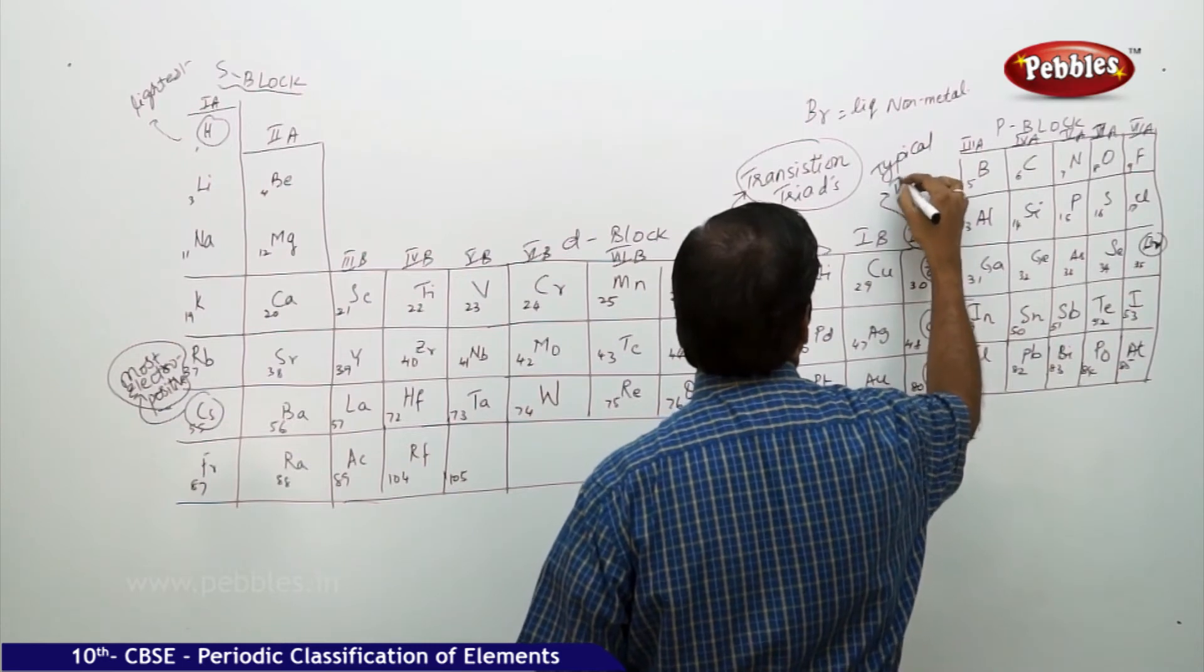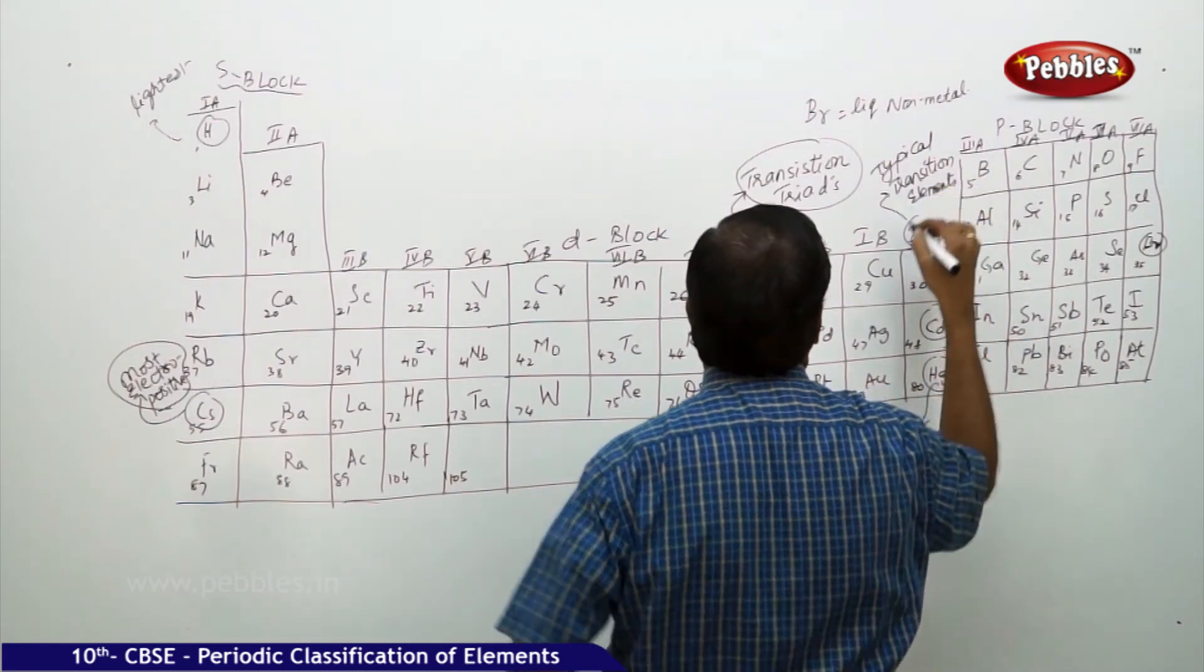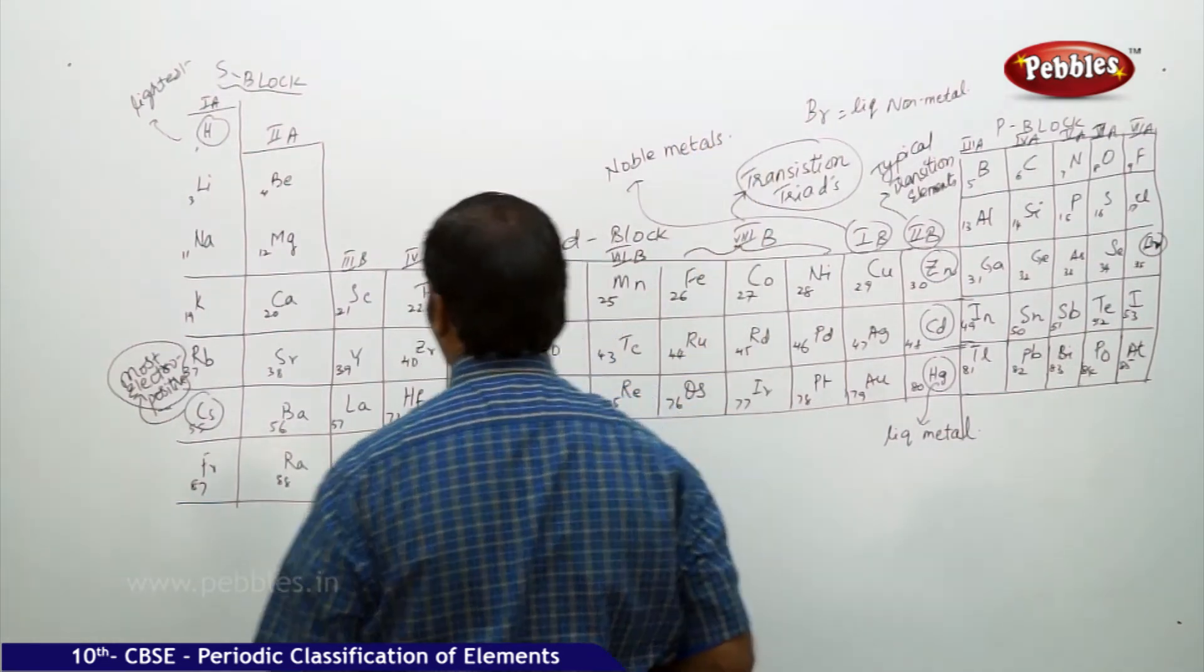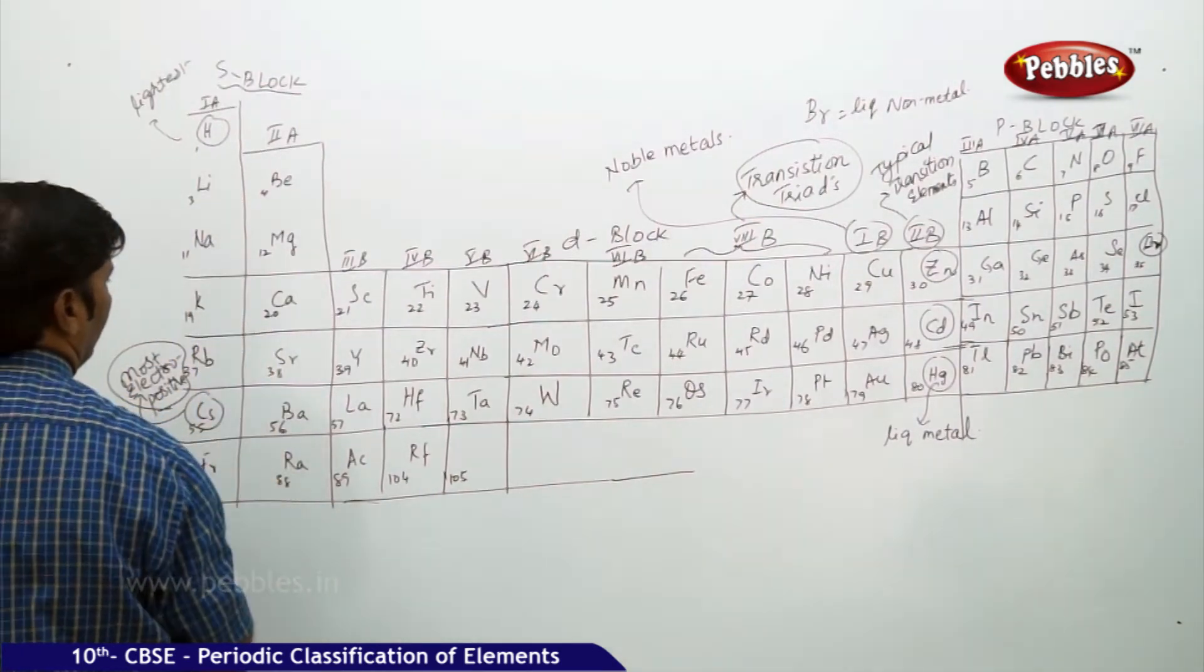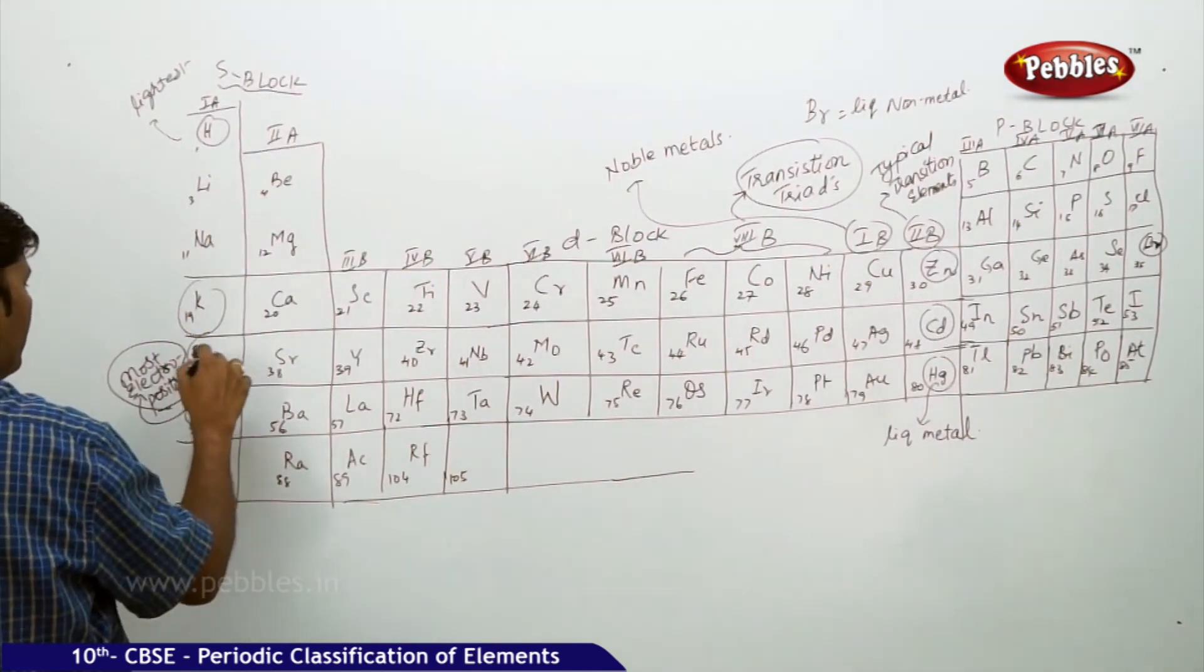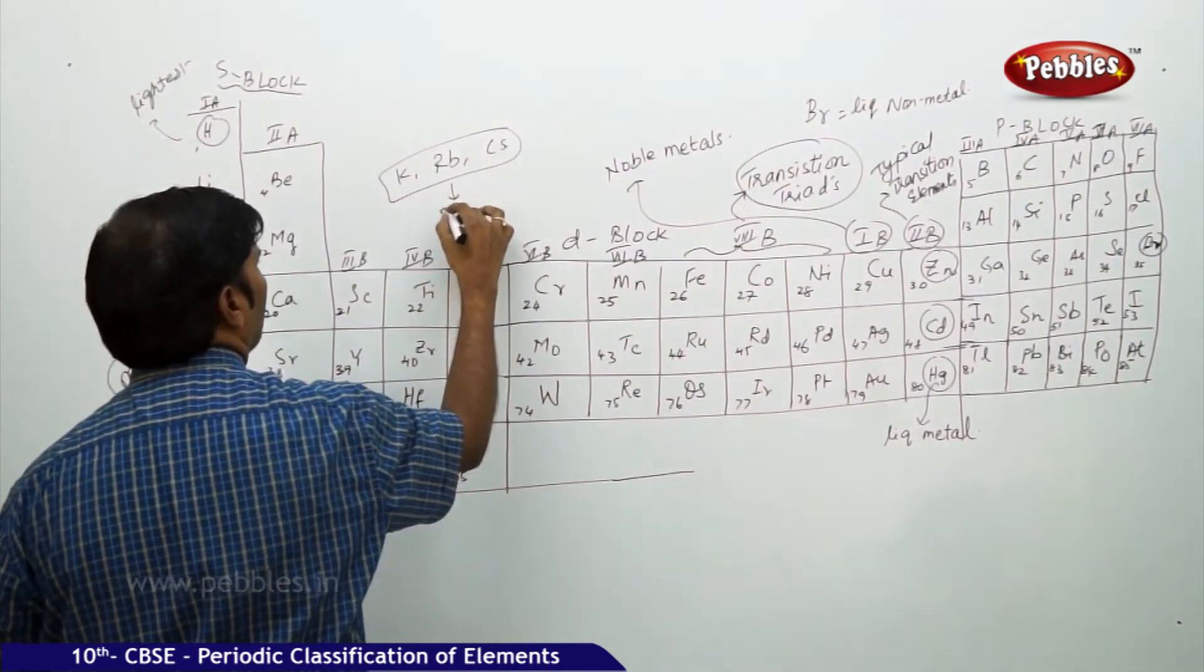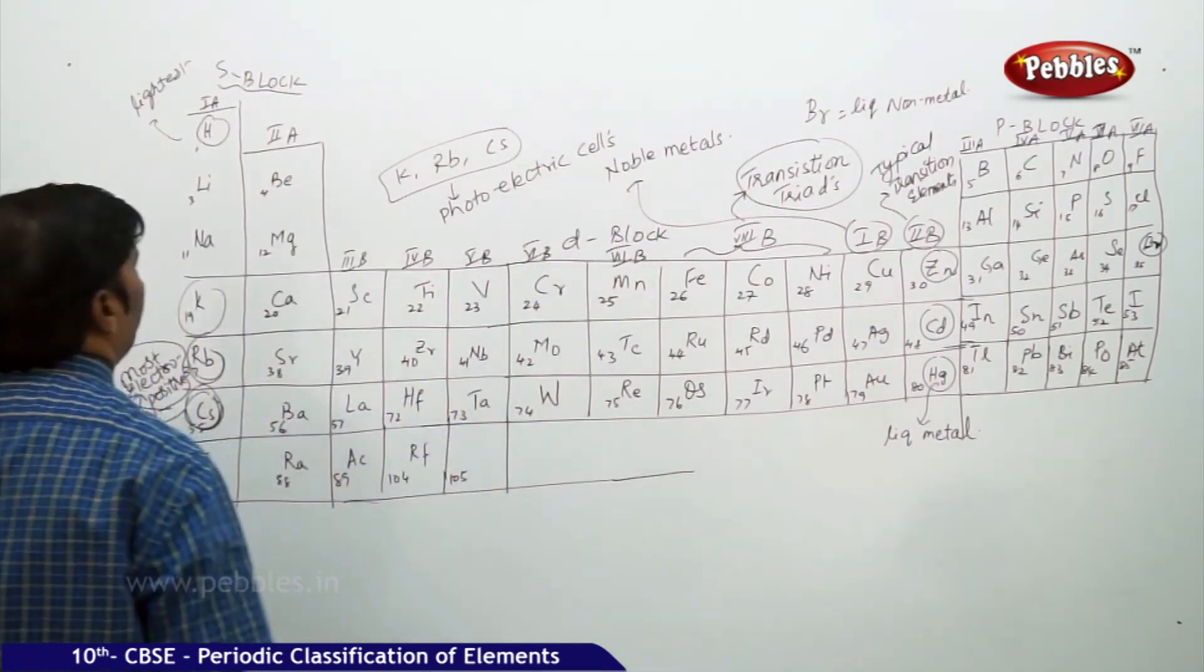Zinc cadmium and mercury, these are called typical transition elements. 1B are noble metals. Potassium, rubidium, and cesium, these three metals are used in photoelectric cells.